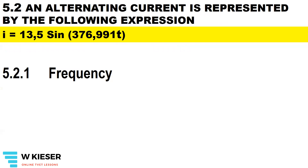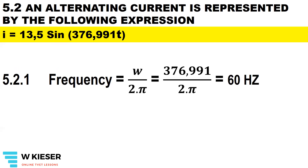An alternating current is represented by the following expression. Here we're dealing with the letter I, so it's for current and it's still a sine wave. The maximum value is 13.5 and the angular velocity in radians per second is 376.991. Don't forget to convert radians to degrees by multiplying by 57.3. To calculate the frequency, it is the angular velocity in radians per second divided by 2 divided by pi, and that gives us 60 hertz.